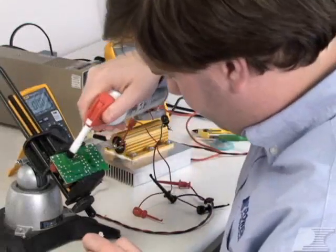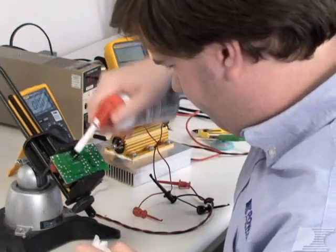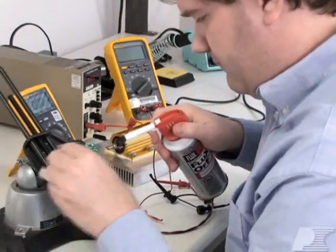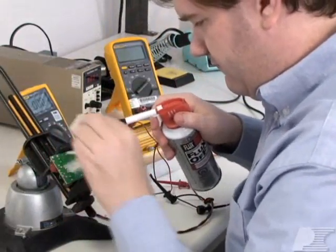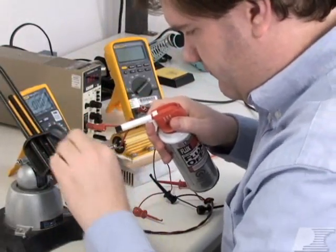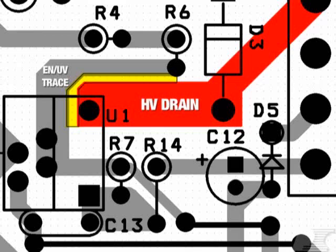If this solved the problem, then verify that your board is clean of flux and that no high voltage traces are in close vicinity to the undervoltage trace. For example, in this design, the EN UV trace is extremely close to the high voltage drain trace. This allows noise coupling and leakage currents between the drain trace and the EN UV pin.